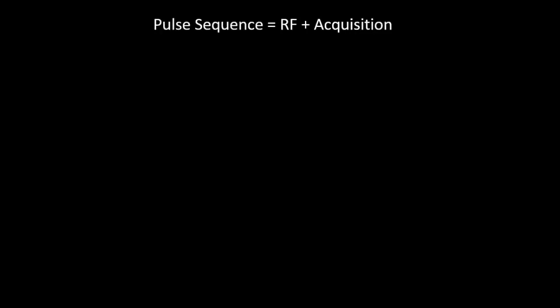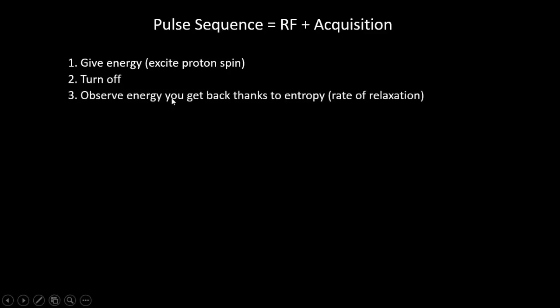What am I talking about when I say pulse sequence? An MRI sequence is basically a sequence of events that happens inside the MRI machine that gives you your image. Each pulse sequence consists of two basic components: first, your radio frequency component, and second, your acquisition phase. We give energy to our system or tissue — we excite proton spins using radio frequency energy. Then we turn off that source of energy and observe the energy we get back from that excited tissue due to relaxation of the proton spins back into alignment with the magnet. The differences in rates of relaxation of protons in different tissues give us our contrast.